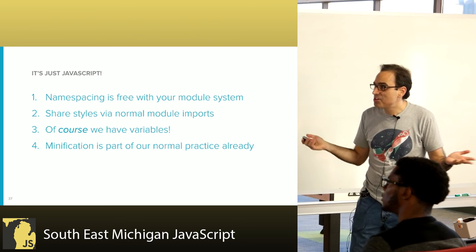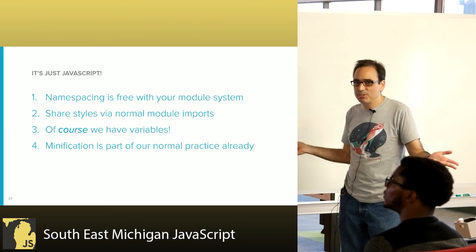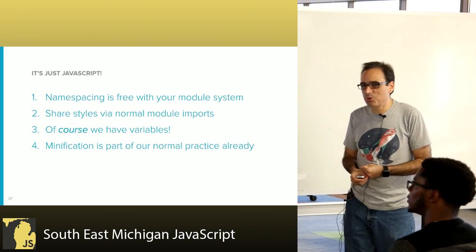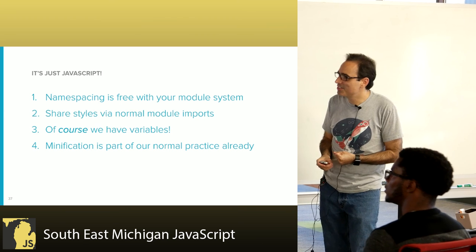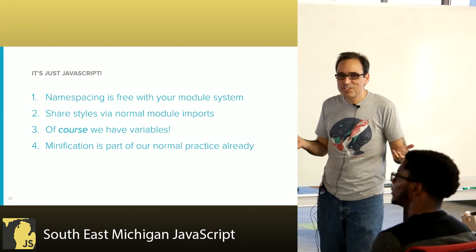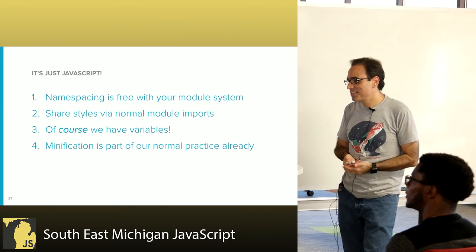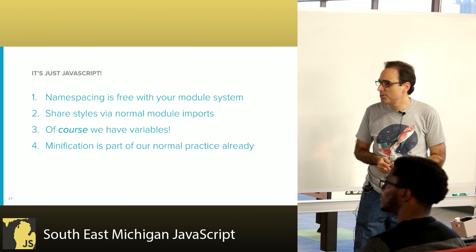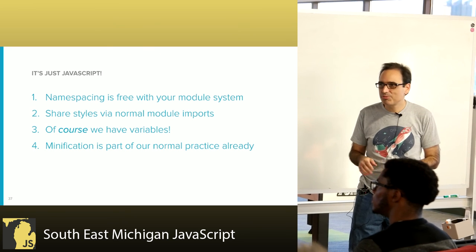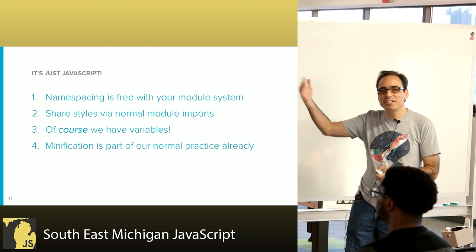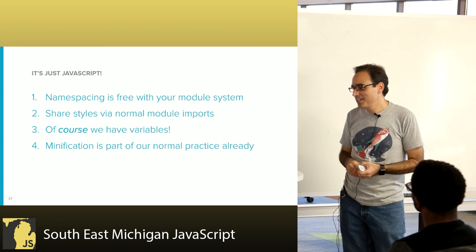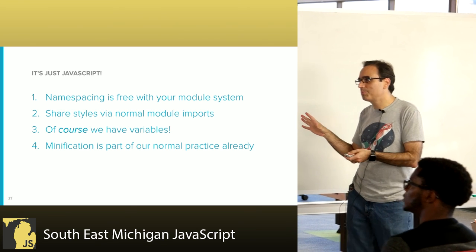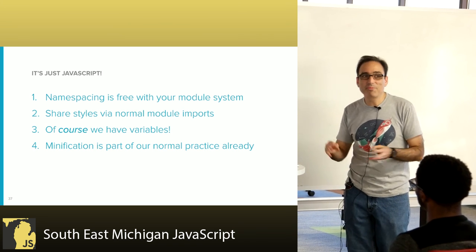Since this is JavaScript, namespacing is free with whatever module system you're using. You can share styles via normal module imports. And of course we have variables because it's a real programming language. Minification is something we already do to our JavaScript, so that's covered. Pretty much, Aphrodite is fixing the problems that Christopher Chadeau brought up in his talk — Aphrodite can fix those same problems without introducing new problems of its own.